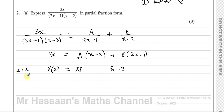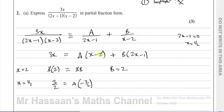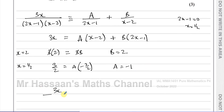For a, I substitute x = 1/2 to make (2x−1) = 0. That gives 3/2 = a×(1/2−2) = a×(−3/2). Multiplying both sides by −2/3 gives a = −1. So we have a = −1 and b = 2, meaning 3x/((2x−1)(x−2)) = 2/(x−2) − 1/(2x−1).